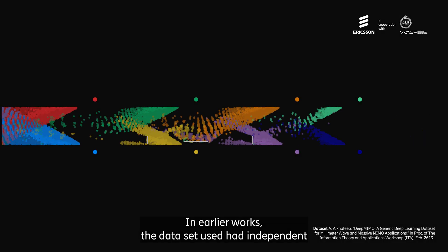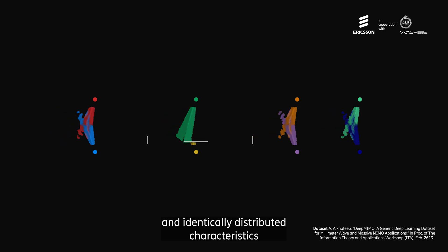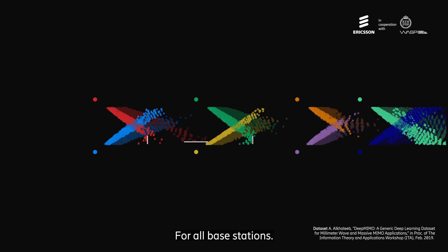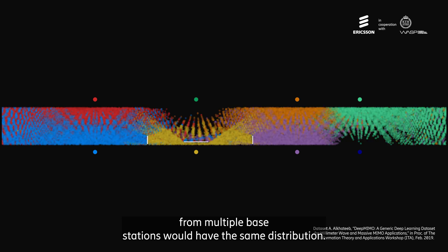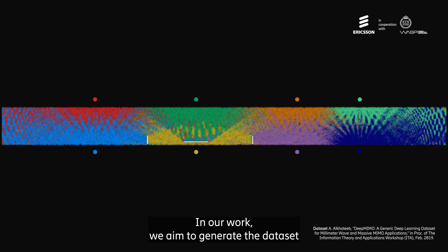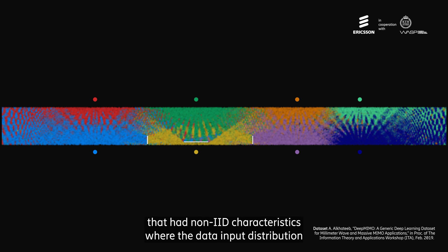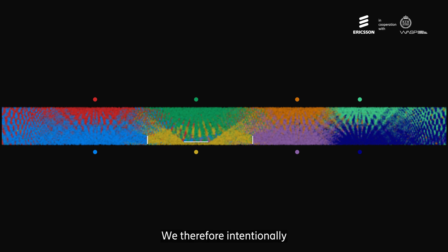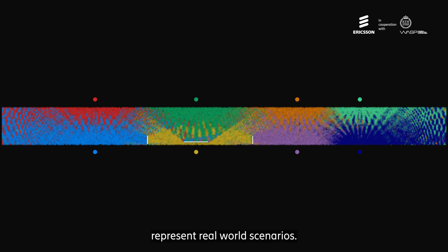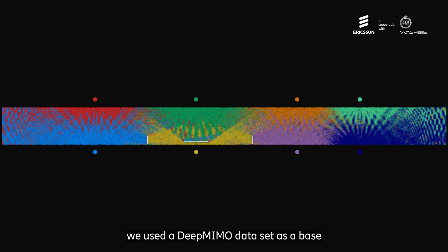In earlier works, the datasets used had independent and identically distributed characteristics, where the data distribution was the same or similar for all base stations. In practice, however, it is unlikely that data collected from multiple base stations would share the same distribution. In our work, we aimed to generate a dataset with non-IID characteristics, where the input distribution and output class distribution differed between base stations. We therefore intentionally made the dataset unbalanced between base stations and used the DeepMIMO dataset as a base, introducing variations to better represent real-world scenarios.